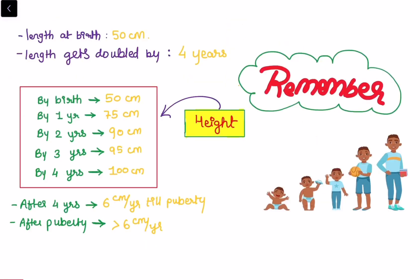The length at birth is 50 cm, and it gets doubled by the age of 4 years. Remember: weight doubled by 6 months, while length doubles by 4 years. By 1 year it is 75 cm, by 2 years 90 cm, by 3 years 95 cm, and by 4 years 100 cm — that is 100% of birth length achieved by age 4. After 4 years, it increases by 6 cm per year until puberty (around 12 to 13 years), and after puberty it increases by more than 6 cm per year.